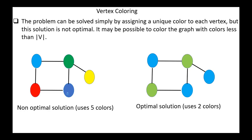We can color this graph using only two colors: Chi of G equals two — blue, green, blue, green, blue. So the optimal solution uses two colors instead of five.